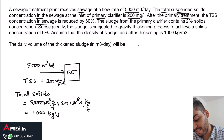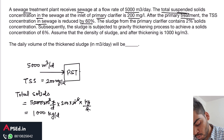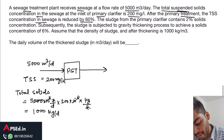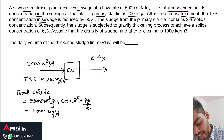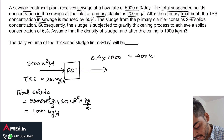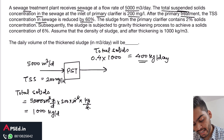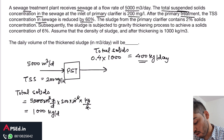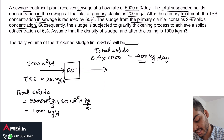After primary treatment, the TSS concentration in the sewage is reduced by 60%. So the supernatant leaving the tank retains the remaining 40% of solids: 0.4 × 1000 = 400 kg per day. That is the solids concentration in the supernatant. The sludge from the primary clarifier contains 2% solids concentration.